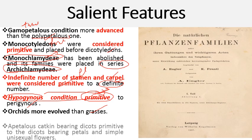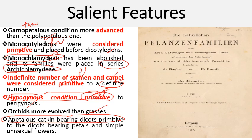Orchids were considered more evolved or advanced as compared to the grasses. Apetalous catkin-bearing dicots were considered primitive relative to dicots bearing petals and simple unisexual flowers. Dicots having petals and unisexual flowers are considered advanced compared to the apetalous catkin-bearing dicots.